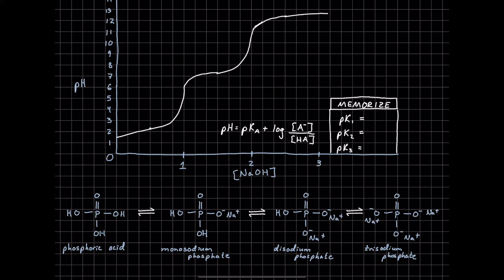In this titration we start at a very low or acidic pH, because remember pH is the negative log of the concentration of hydrogen or hydronium ions that we have in solution. So low pH is acidic. At this very low pH we have the predominant form being phosphoric acid, where all of these alcohol groups attached to this phosphorus are protonated. So that's the predominant form.